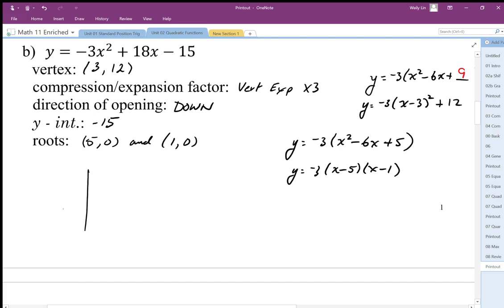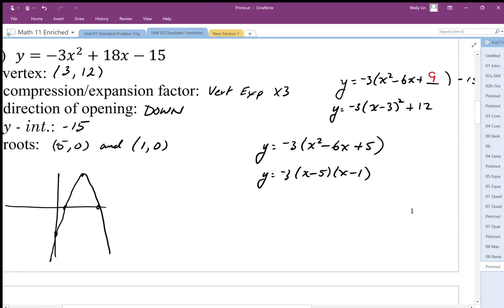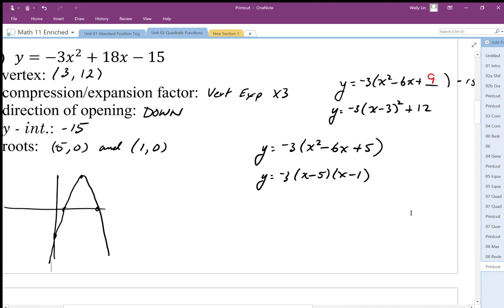When I sketch a graph of this function, I've got my vertex at 3 over, 12 up. I've got my y-intercept at negative 15 somewhere down here. So it looks something like that. We have all the information corresponding with what we found here. The graphing form gives us the vertex, the factored form gives us the zeros.